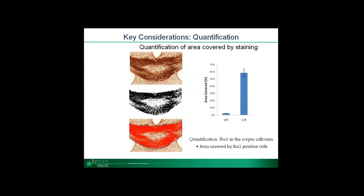Here at Renovo, to answer those quantitative questions, we use blinded automated algorithms to analyze all our tissue. We generate custom validated algorithms for each stain. This removes both human error and potential bias, as the data is only unblinded after final image quantification and QC is complete. Some stains like this microglial stain — IBA1 in the corpus callosum — can lead to very dense staining that obscures individual cells. In this type of staining, area occupied can provide relative staining density necessary to compare groups.